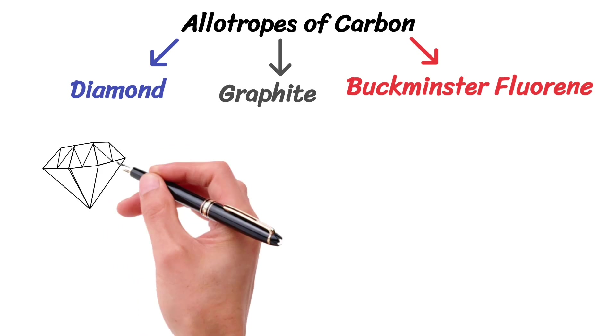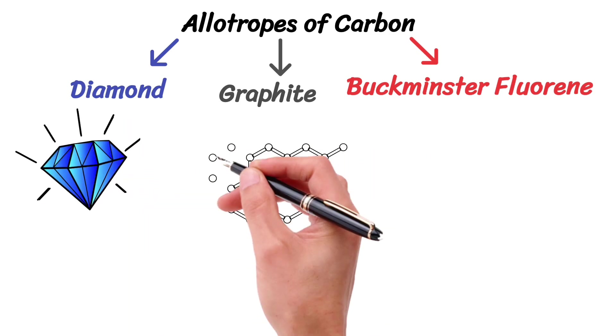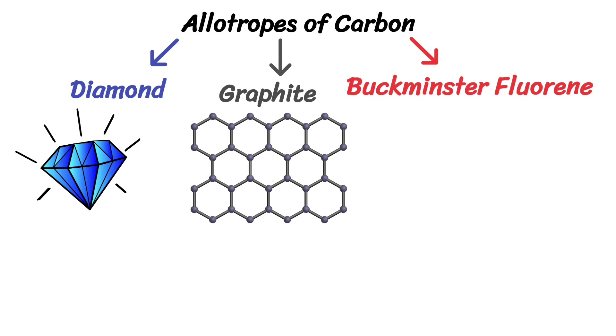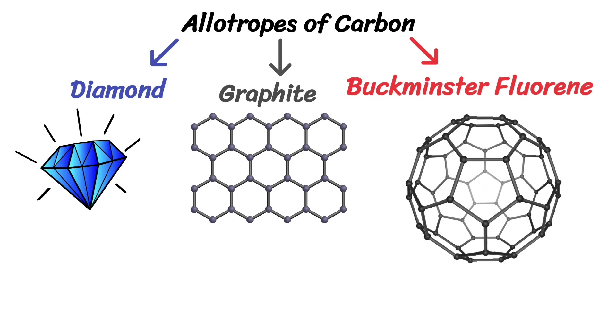Diamond has a giant macromolecular structure. Whereas graphite has a layered structure of hexagonal rings of carbon. Buckminsterfullerene consists of spheres made of carbon atoms arranged in pentagons and hexagons.